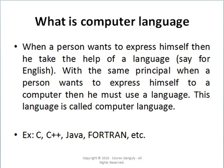What is computer language? When a person wants to express himself to another person, he must use a language — it may be English, Bengali, Hindi, or others. In the same way, when a person wants to express himself to a machine, he must use a language, and this is known as computer language. C, C++, Java, and Fortran are examples of computer language.